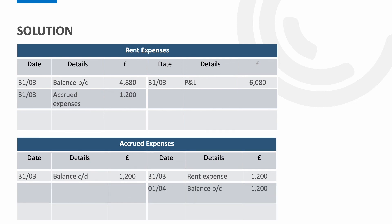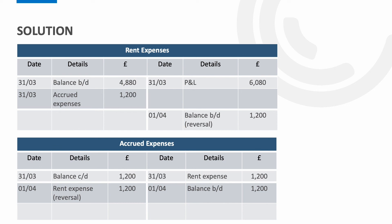At the start of the next financial year the accrual is reversed: we credit the rent expense for £1,200 and debit the accrued expenses for £1,200. This results in a nil balance on the accrued expense account and a £1,200 credit balance on the rent expense. The accrued expense account is now tied off. Within the rent expense, the £1,200 will be invoiced and paid around the start of the new financial year, recorded as a debit that offsets the £1,200 credit balance already in the account.